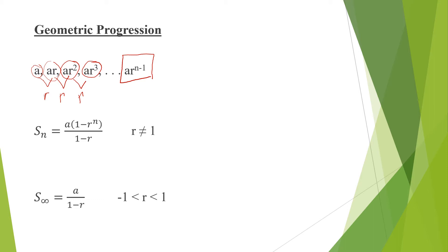The sum of the terms of a geometric progression gives a geometric series. Notice that if the starting value is a and the common ratio is r, then the sum of the first n terms is given by this formula. This formula is applicable if and only if r is not equal to 1.